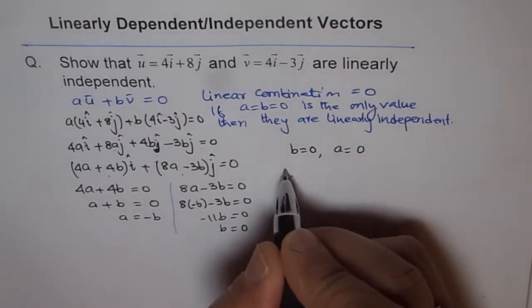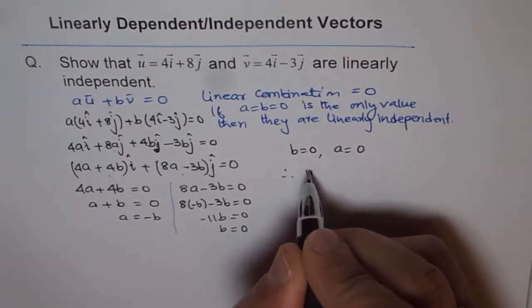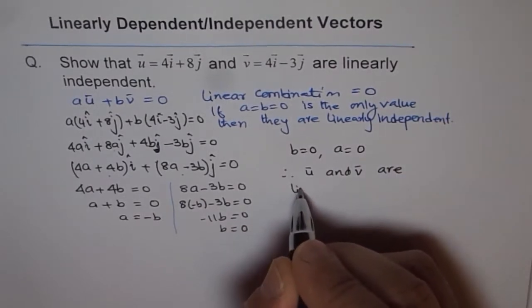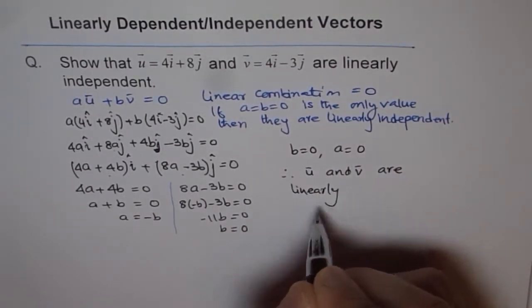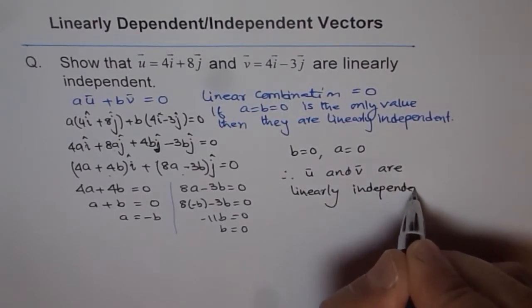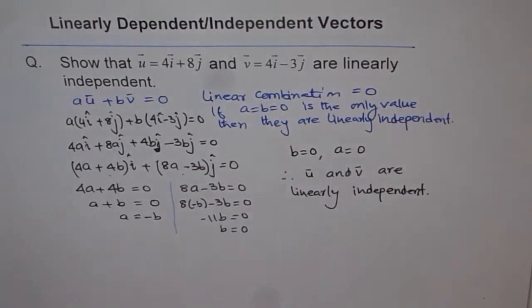Therefore, we can say that vector u and vector v are linearly independent. So that is how we prove that the given vectors are independent.